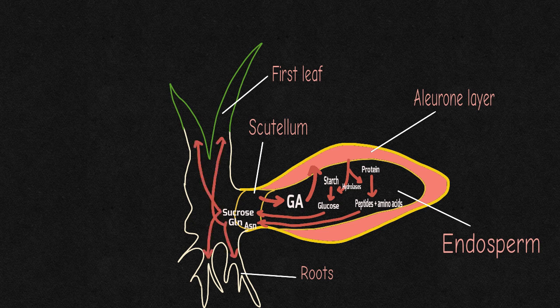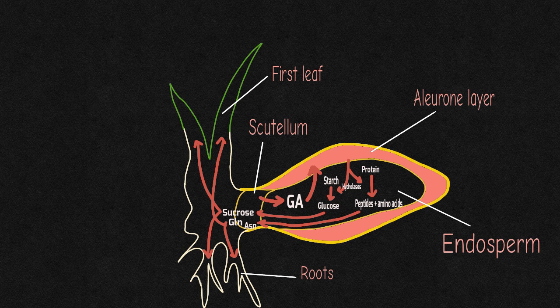These are transported throughout the seedling via the vascular system as a supply of nutrients to support growth.